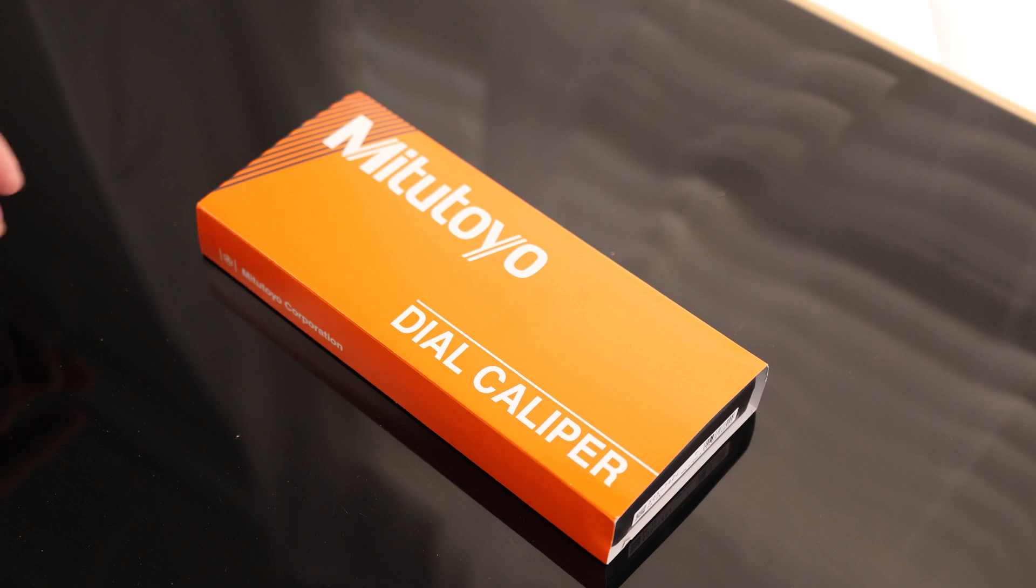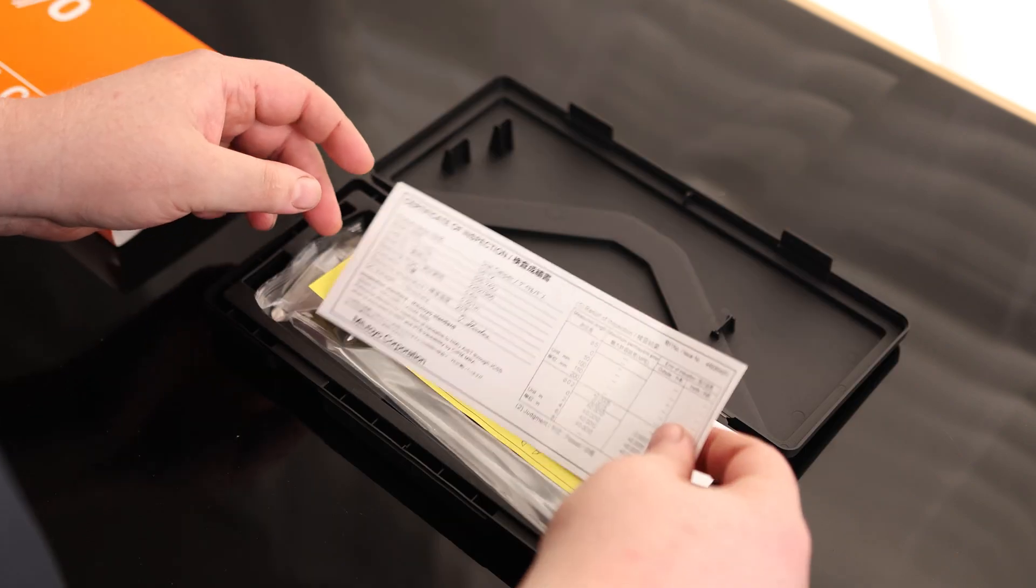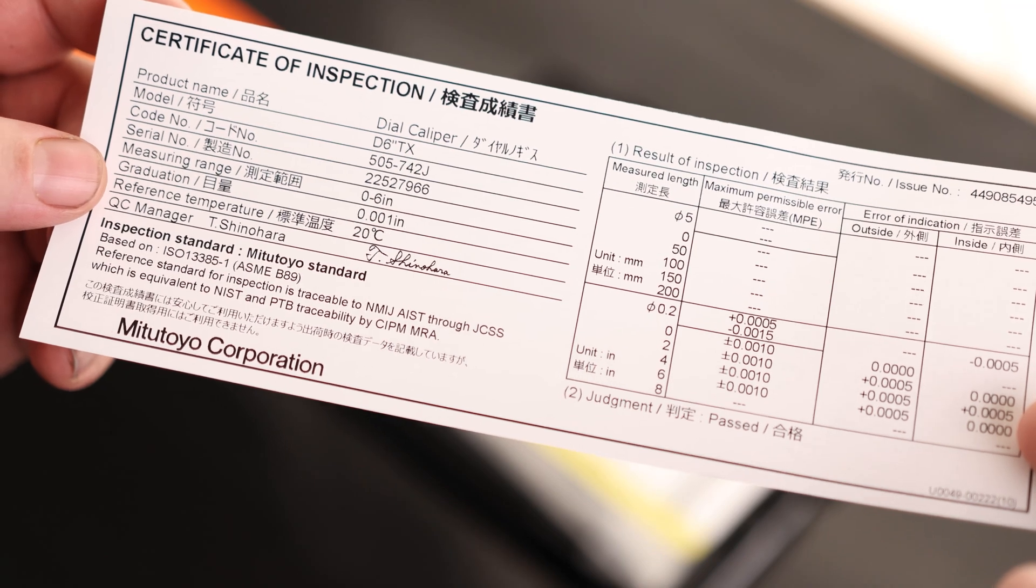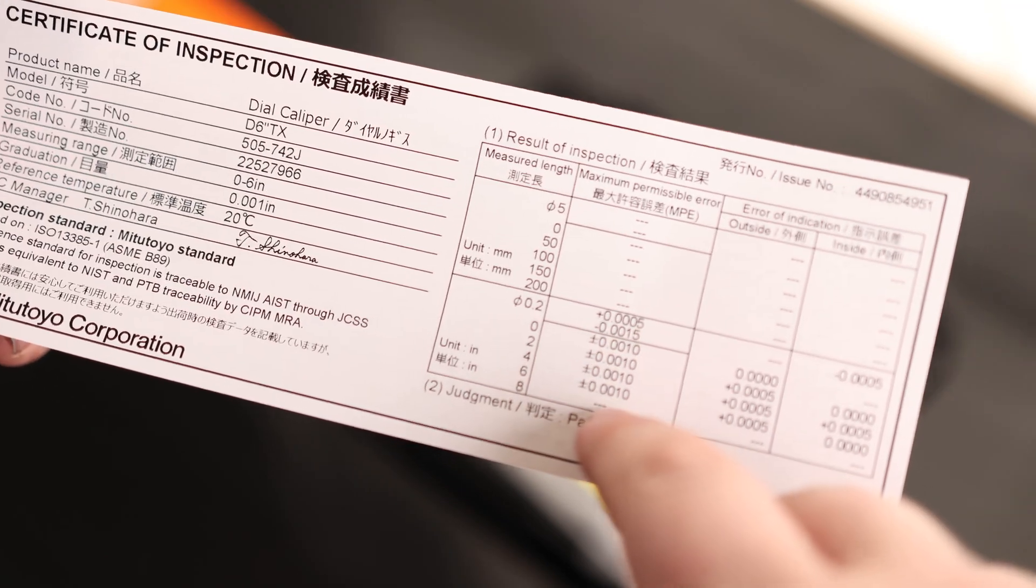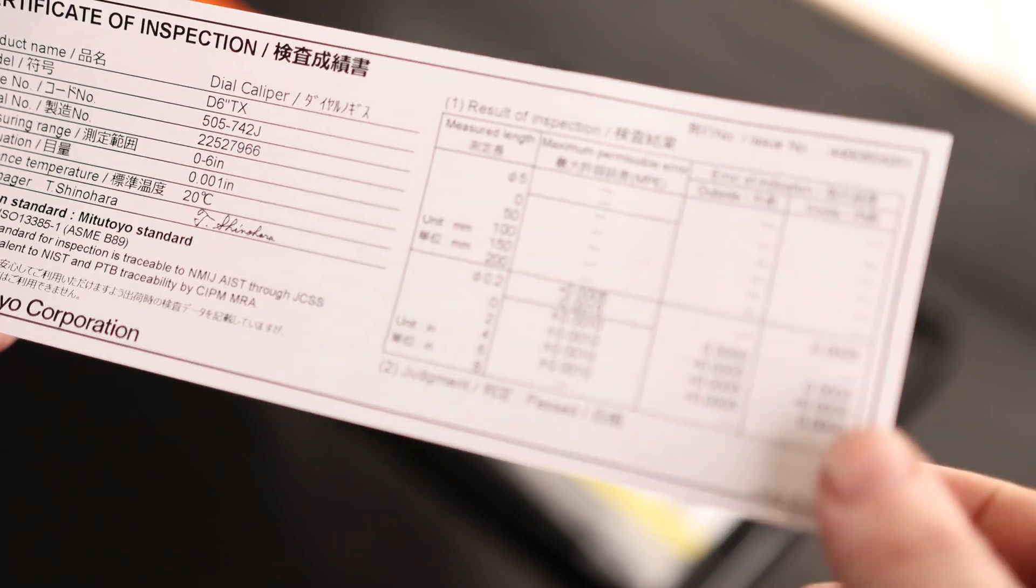Today I'm taking a look at the Mitutoyo dial caliper. I always like seeing these quality control sheets. It means there is actually some quality control. They looked at the thing and measured it. This is the tolerance that is allowed to be out, and then this is the tolerance that is actually out.